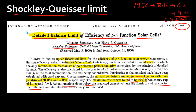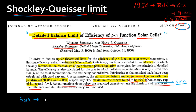We were discussing one of my favorite papers, which was on the detailed balance limit of efficiency of solar cells, also called the Shockley-Queisser limit. This paper was published in 1961, and people at that time could not comprehend that solar cells could reach efficiencies of 30%. In the first five years of its publication, it was only cited eight times. Nowadays, it's cited once every week.